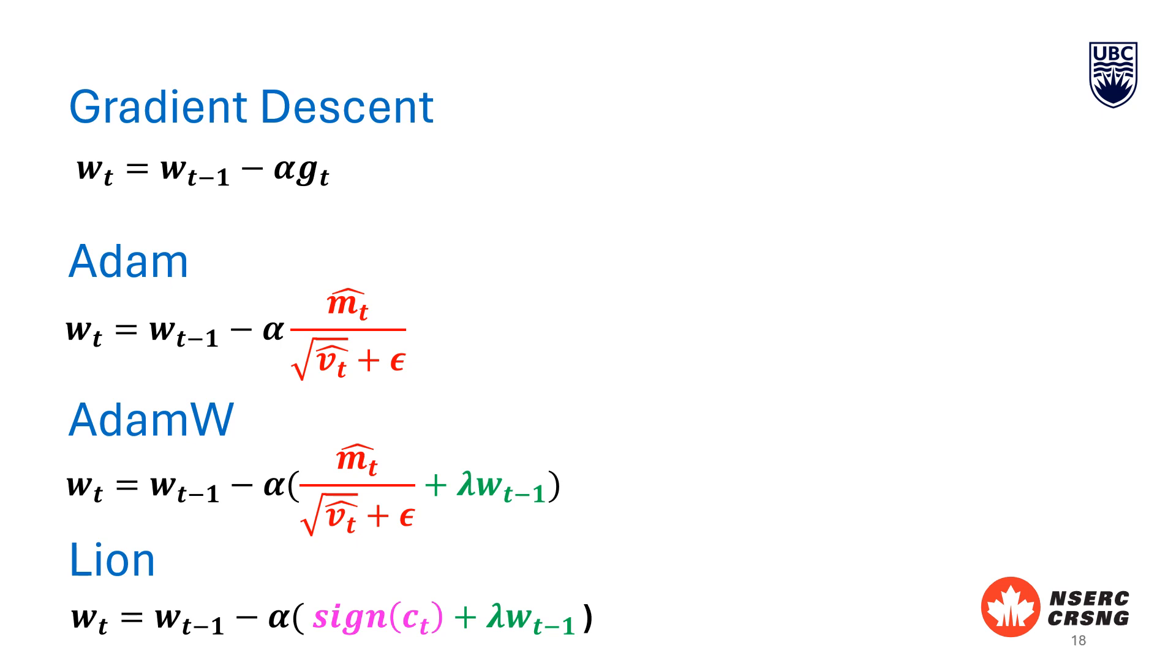LION focuses on the direction of the gradient rather than its magnitude, ensuring consistent updates and maintaining a memory of past gradients for smoother optimization. AdamW uses detailed statistical measures of the gradient, taking into account both its mean and variance for nuanced updates. In essence, LION's approach simplifies the gradient update process by focusing on the direction of the combined gradient and momentum while maintaining a long-term gradient history to stabilize updates.